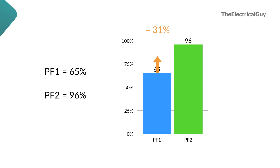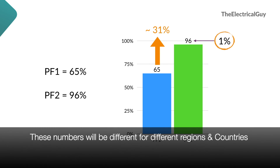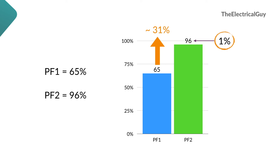Electricity providers also give incentives for maintaining a high power factor. For example, the Maharashtra utility gives a 1% incentive if you maintain a 96% power factor. On a 1 lakh rupee bill, you only pay 99,000 rupees. If you improve further to 99% or unity power factor, the utility gives a 7% incentive — so your bill becomes only 93,000 rupees, saving 7,000 rupees per month.